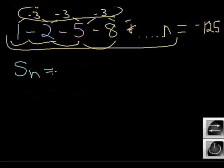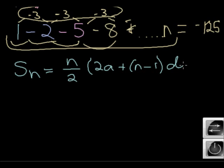The sum notation of n over 2, 2a plus n minus 1d. Now I just substitute. What do I want to solve again? N. In other words, n is going to stay unknown, which means we have to know a, we have to know d, and we have to know the sum of all the terms up to n.